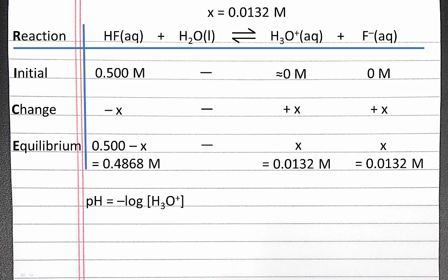To calculate pH, we use the equation pH equals negative log of our hydronium ion concentration, which from our table is our value of x. When we plug it into our calculators, we should get 1.88. So the pH of our weak acid solution is 1.88.